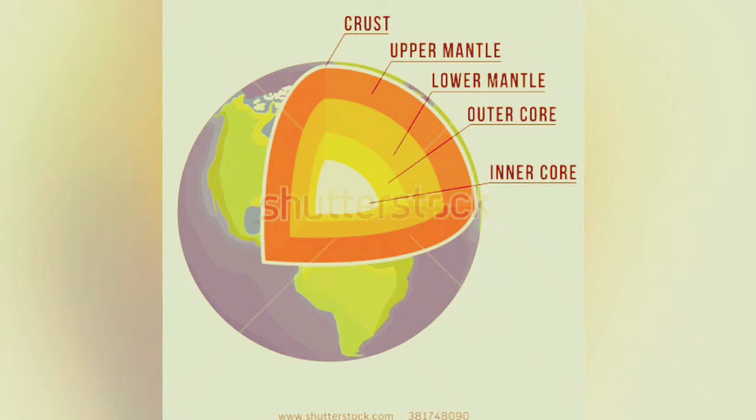Our knowledge of the structure and nature of the Earth's interior has been derived in large part from studies of seismic waves released by earthquakes. An earthquake occurs in the crust or upper mantle when the tectonic stress exceeds the local strength of the rocks and failure occurs. Away from the region of failure, seismic waves spread out from an earthquake by elastic deformation of the rocks through which they travel. Their propagation depends on elastic properties that are described by the relationship between stress and strain.